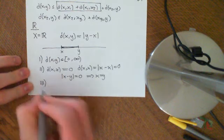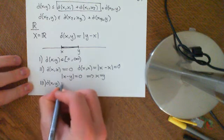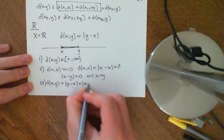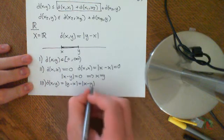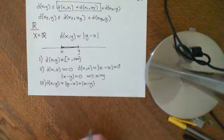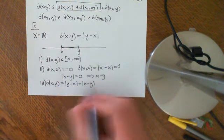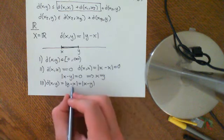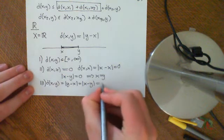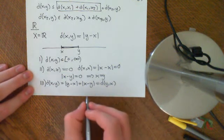Axiom 3: symmetry. The distance between x and y equals the modulus of y minus x, but this modulus is equal to the modulus of x minus y. It doesn't make any difference whether you do the subtraction in the other order, because x minus y is the negative of y minus x, but when you take the modulus sign it gets rid of that negative sign anyway. This equals the distance between y and x, so the symmetry property holds.